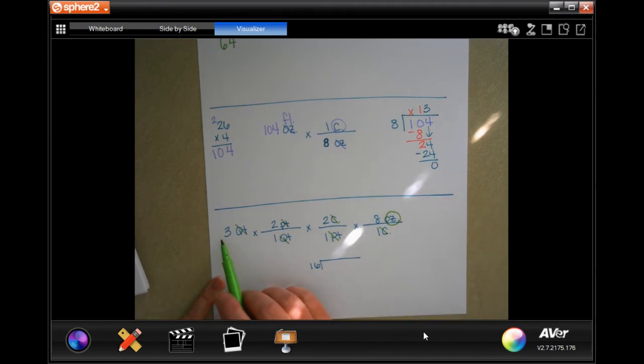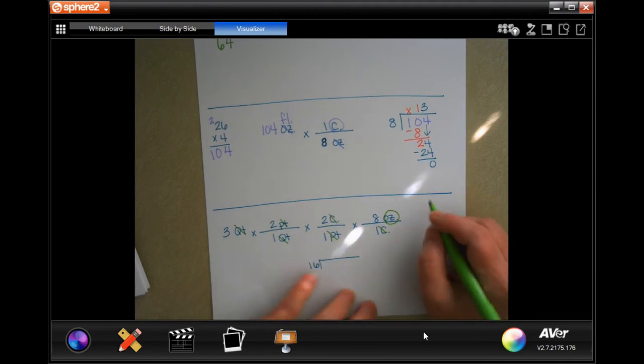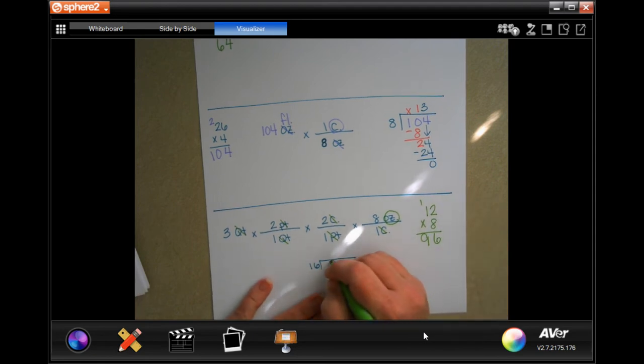Now we have to multiply straight across. So three times two is six, times two is twelve, and twelve times eight. Eight times two is 16, carry the one. Eight times one is eight, plus one is nine. 96.